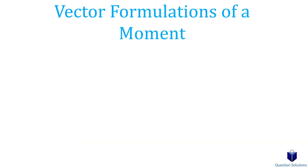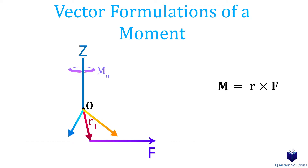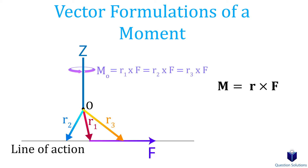Now if we need to consider moments in three dimensions, then we need to use the cross product. We find the moment by taking the cross product between the force and a position vector. The position vector can be from the location where we're finding the moment about, to anywhere along the line of action of the force.